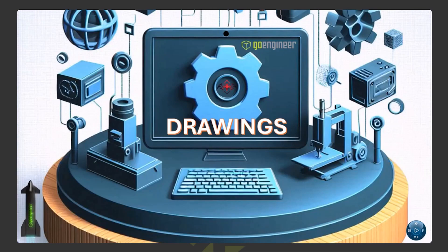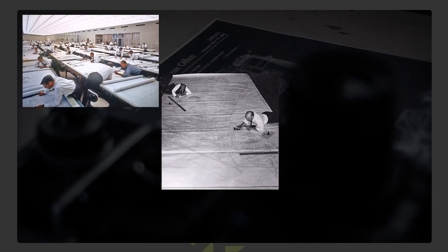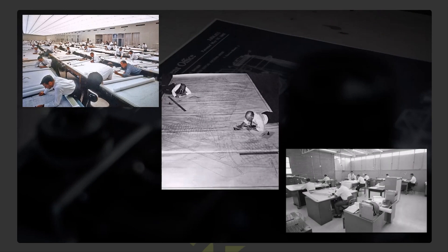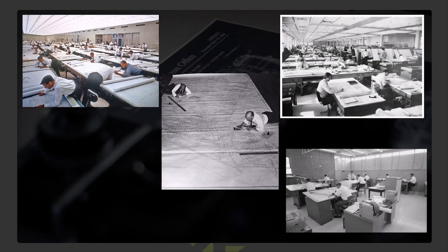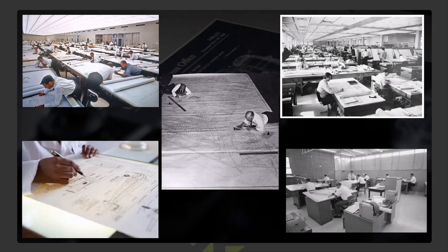All right, let's get started everybody. Thank you for being here today on behalf of Go Engineer — Steve Darcy and myself. We're going to be covering drawings today and we have a lot to cover, so we're going to jump right in. Think about how far we've come with drawings. Those guys were laying out what looks to be Manhattan, and engineering departments looked like this — everybody at a design table, trying to make sure all the views, view scales, and text match. We've come a long way.